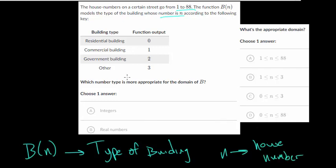So what is the, which number type is more appropriate for the domain of b? Well, domain deals with n, the house numbers, and those go from 1 to 88. But when you have physical house numbers or addresses, they don't have fractions.